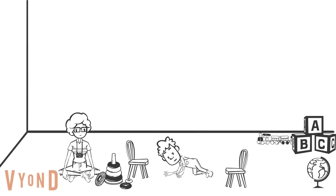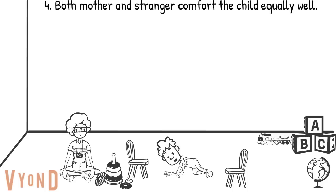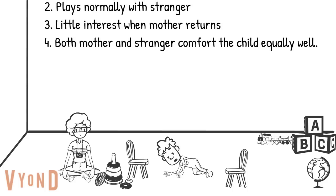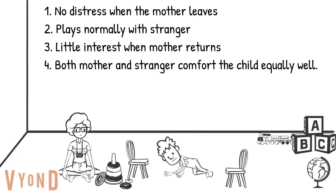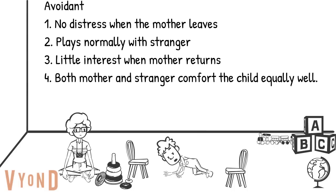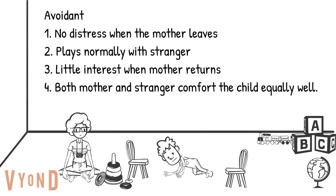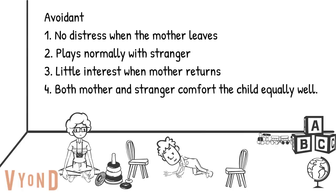Avoidant attachment occurs in about 15% of children. The child doesn't really experience separation anxiety when the mother leaves, is okay with the stranger, plays normally with the stranger, and shows little interest in the mother when she returns to the room. Children with avoidant attachment patterns may be more likely to engage in antisocial behavior and have difficulty forming close relationships with others.